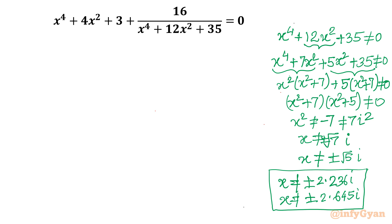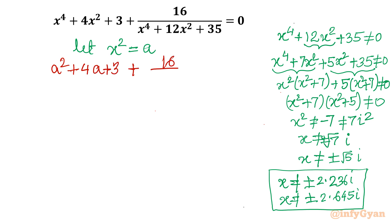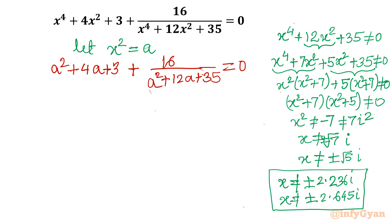Now let's solve the equation. I'll use the substitution: let x² = a. The equation reduces to (a² + 4a + 3 + 16) over (a² + 12a + 35) = 0. Multiplying both sides by the denominator gives us a² + 4a + 3 + 16 with the denominator cleared.